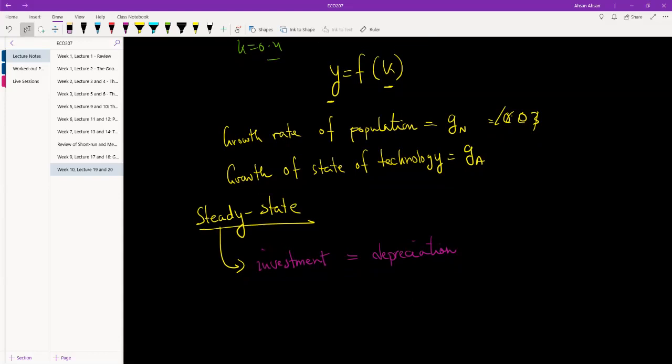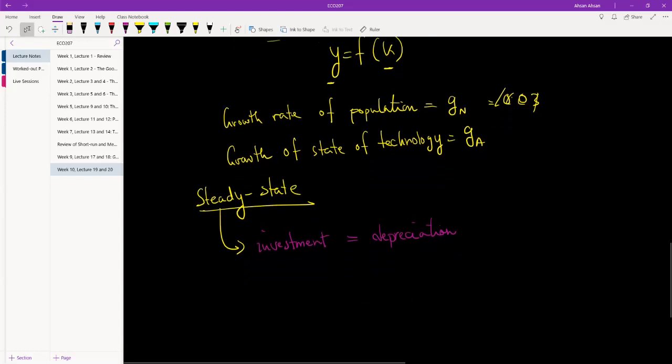If investment was more, capital per worker was increasing, and if depreciation was more, capital per worker was decreasing. When they were equal we had the steady state. And that was investment, which we denoted as sy, which was equal to depreciation, so that was delta K.